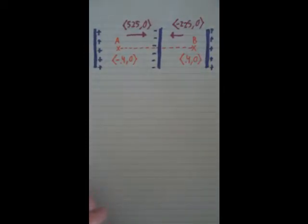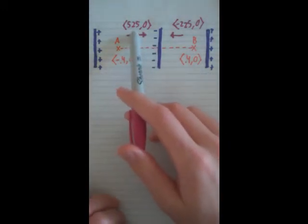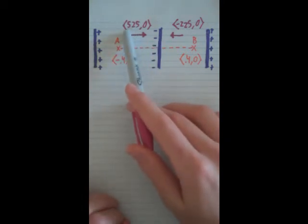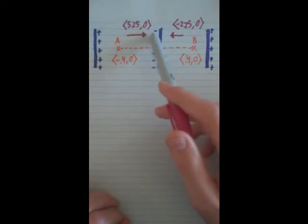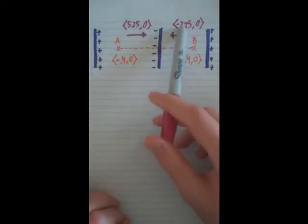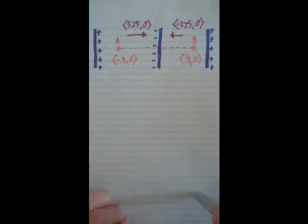We have our two capacitors here. This capacitor with a uniform electric field through it of 525 N per C, and one over here with negative 225 in the x-direction, and they both have zero in the y-direction.